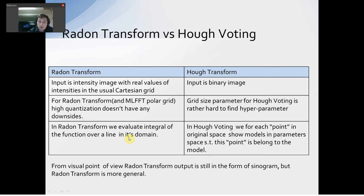In Radon Transform, we evaluate integral of the function over a line. In Hough voting, for each point in original space, we show models in parameter space such that this point belongs to this model. The setup is completely different.